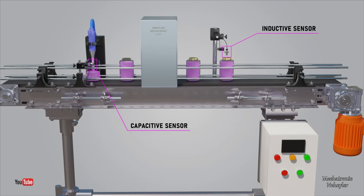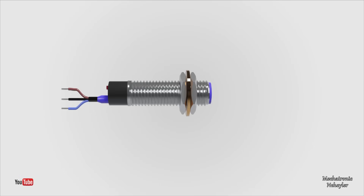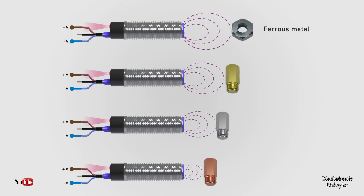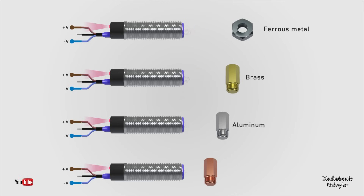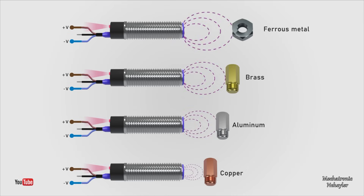Firstly, let's see about the inductive proximity sensor. An inductive sensor is an electronic device that can detect ferrous metal objects at a given distance without physical contact. Some inductive sensors can also detect non-ferrous metal objects such as brass, aluminum, and copper, although the detection range on non-ferrous material decreases. The sensing distance depending on the material can be found in the datasheet of the sensor, though this distance is not more than 80 millimeters.